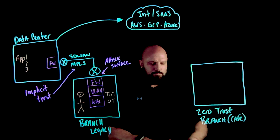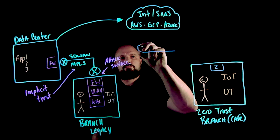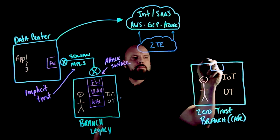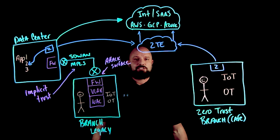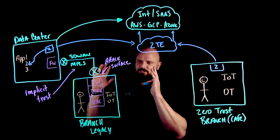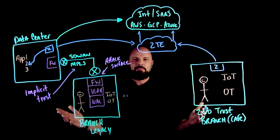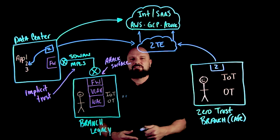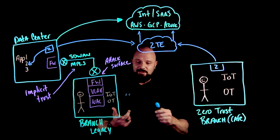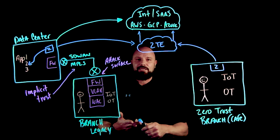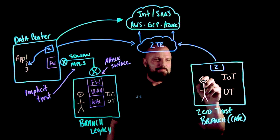With the zero trust branch, you don't extend the network to every branch — you simply send traffic to Zscaler over any broadband connection. The zero trust branch helps eliminate all the challenges of that legacy architecture. If the business comes to you and says we need to stand up a new branch site, the only thing you need to worry about is a 5G or broadband connection — you're ready to rock and roll.